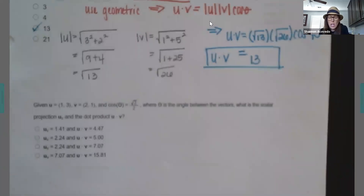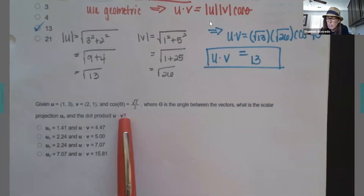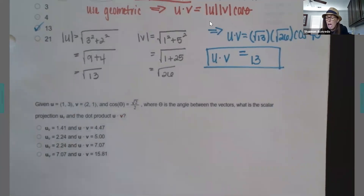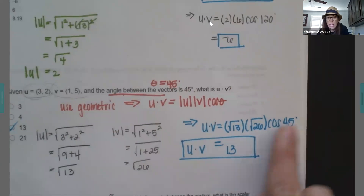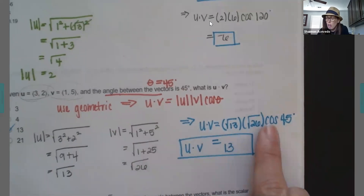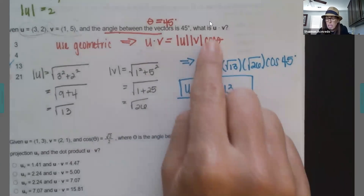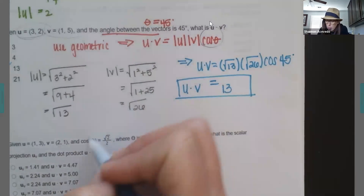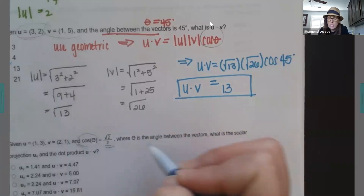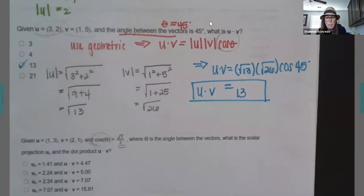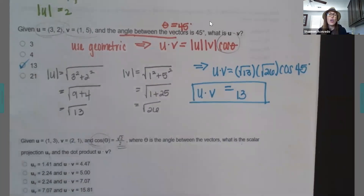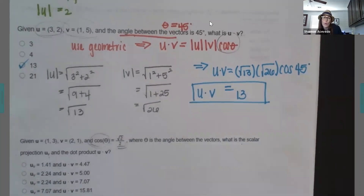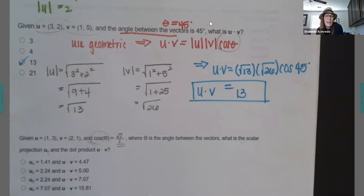My next problem: I'm given these two vectors and I'm given that cosine of theta equals the square root of 2 over 2. I could use geometric since they gave me the two vectors and that whole cosine theta value — that whole piece would equal square root of 2 over 2. But they also ask for the scalar projection, so I would have to use the projection formula to solve that piece.